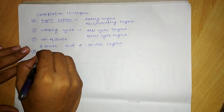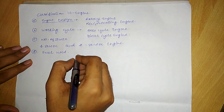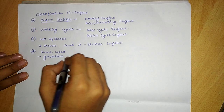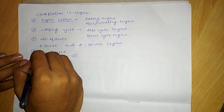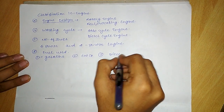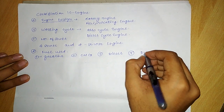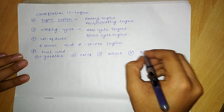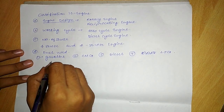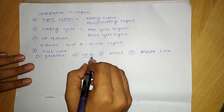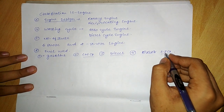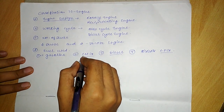The fourth classification of IC engines is on the basis of fuel used. These are: first, the gasoline engine; second, the CNG engine; third, the diesel engine; and fourth, the LPG engine. LPG stands for liquefied petroleum gas and CNG stands for compressed natural gas.